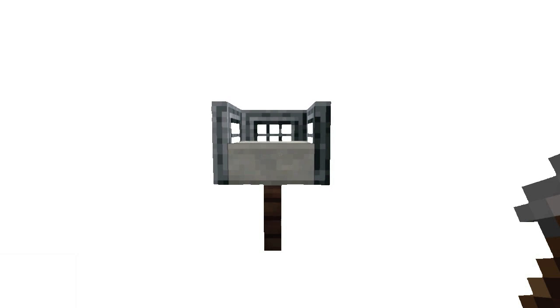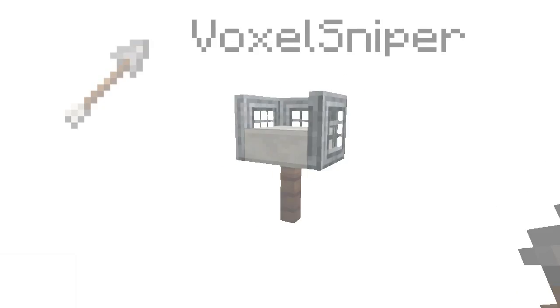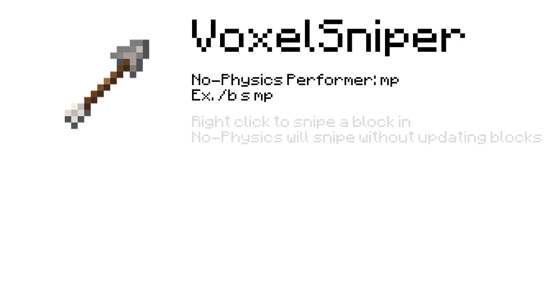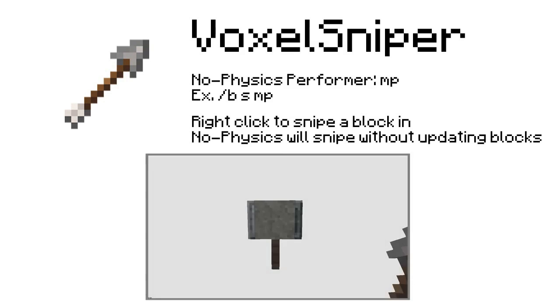Watch as I change this block surrounded by trap doors to create our next chair with the use of VoxelSniper. In VoxelSniper, NoPhysics has its own performer: MP. So we're going to change our voxel type to a half block and type in the command for the snipe brush with the appropriate performer, and then you can simply right click on the placeholder block.